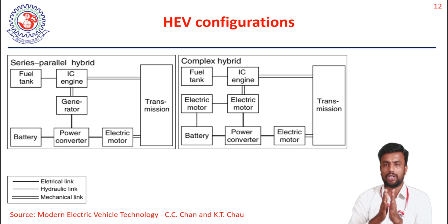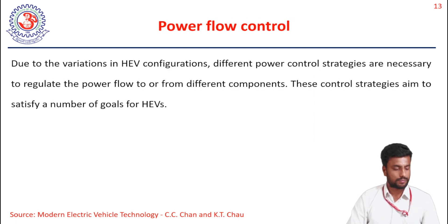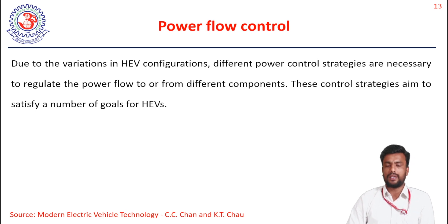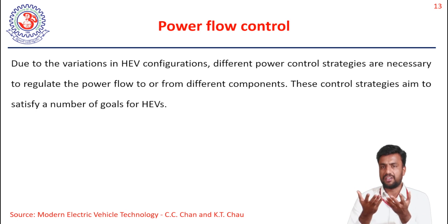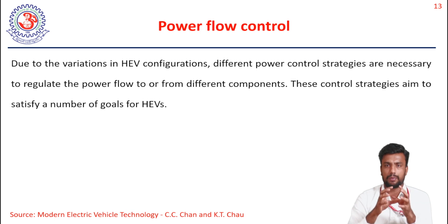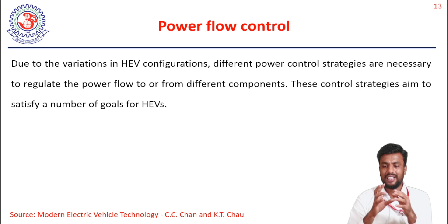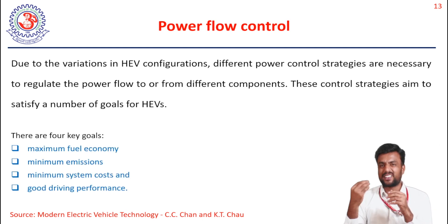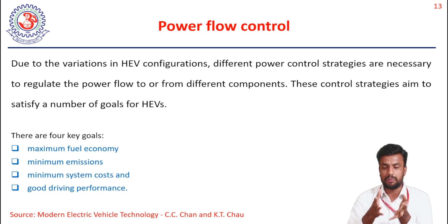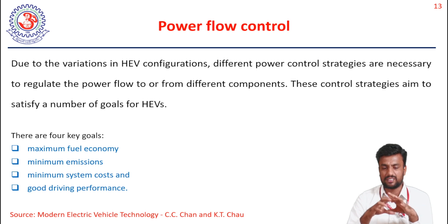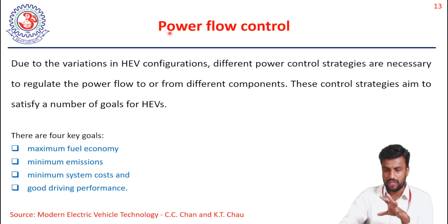So far we have discussed the four HEV configurations: series, parallel, series-parallel, and complex hybrid. Next, we move to power flow control. In the HEV system, we vary power depending on road conditions, switching between IC engine power and EV power. Without a proper control strategy, we cannot achieve maximum fuel economy, cannot reduce emissions, cannot minimize cost, and the driver cannot feel better driving performance.